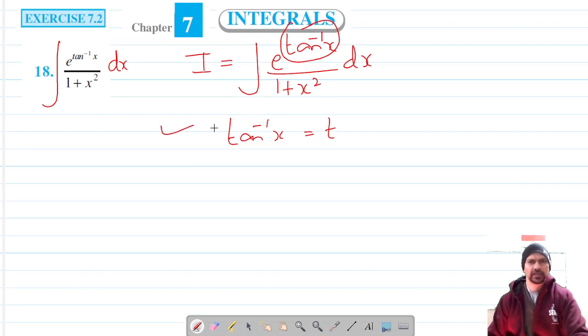So tan inverse x is t and differentiating this with respect to t. Let me just write it down. It's differentiating with respect to t. We have to remember that it's not with x.